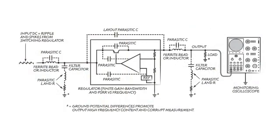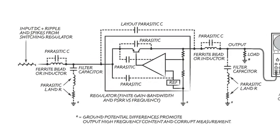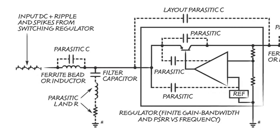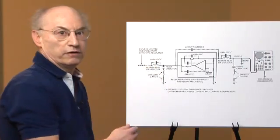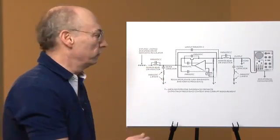Let's take a look at the first slide in greater detail. First of all, the filtering components have parasitics of their own, series inductance and resistance. Even if you use a series inductor to make the filter capacitor more effective, the parasitic shunt capacitance defeats the purpose of the inductor at high frequency.